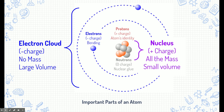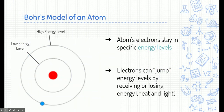Surrounding the nucleus is something called an electron cloud, and in that cloud are electron particles. Electrons are negatively charged, so the electron cloud is negative because electrons are attracted to the positive nucleus. That cloud does not have any mass, but it provides the atom a large volume comparatively. This model of an atom is called a Bohr model, and it's super important because it tells us a little about energy levels of electrons. Electrons in the lowest energy level are closest to the nucleus, and in the highest energy level are farther away.